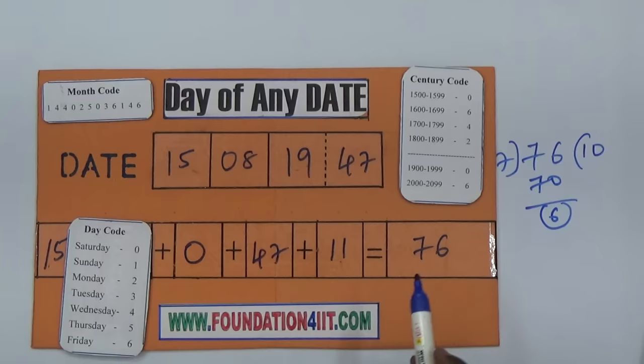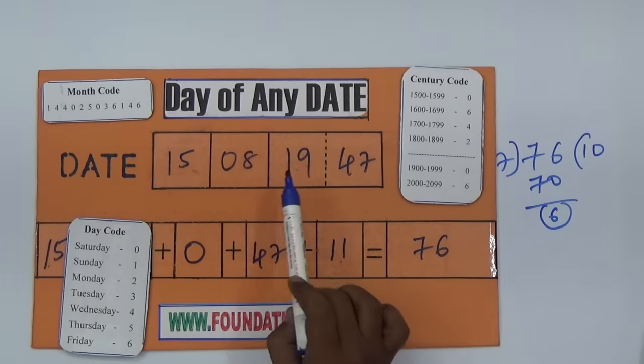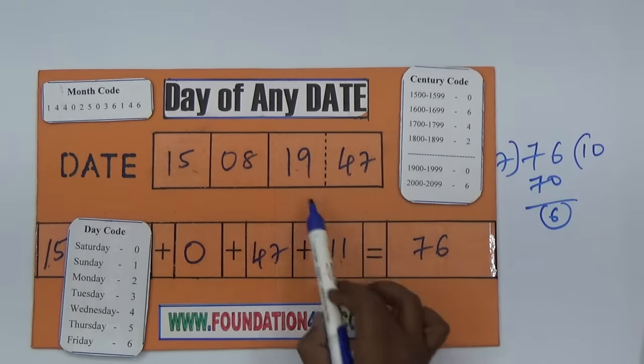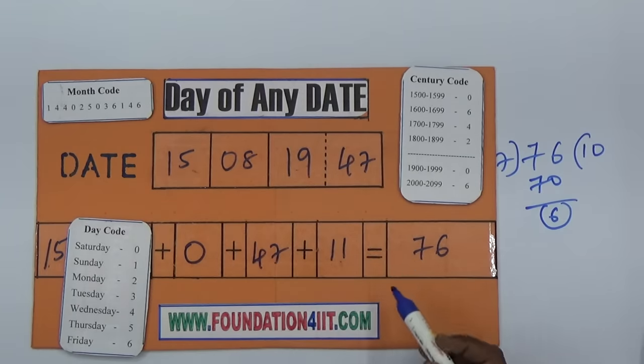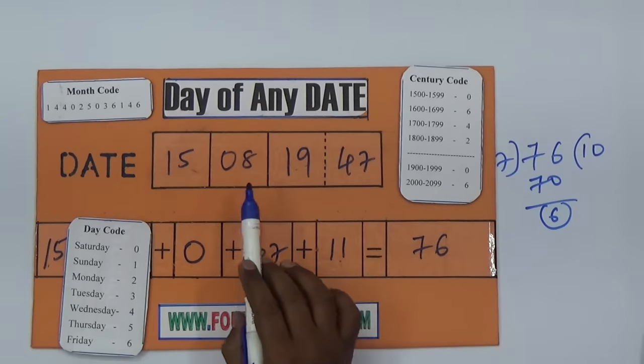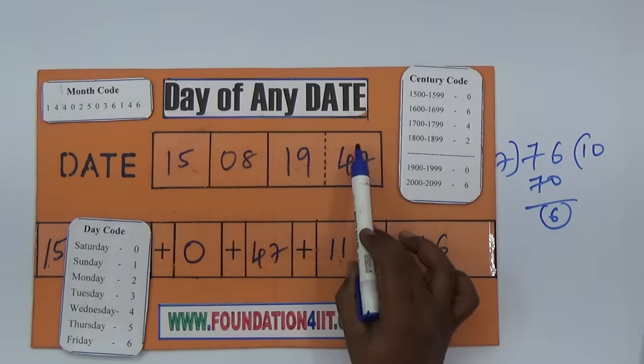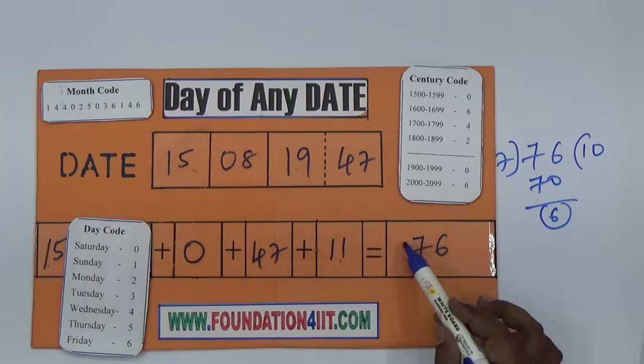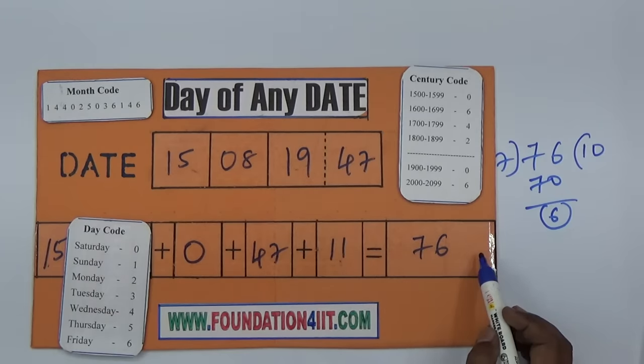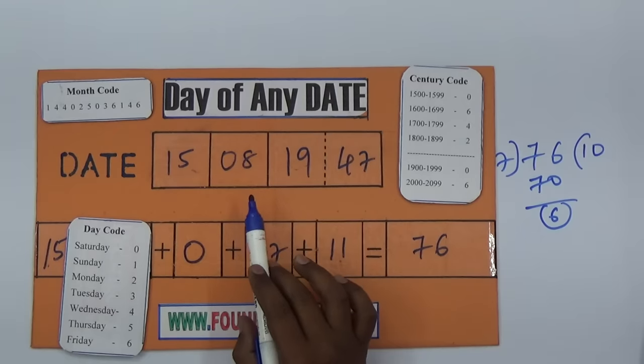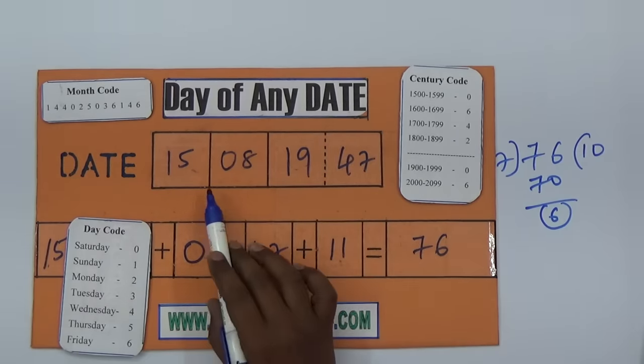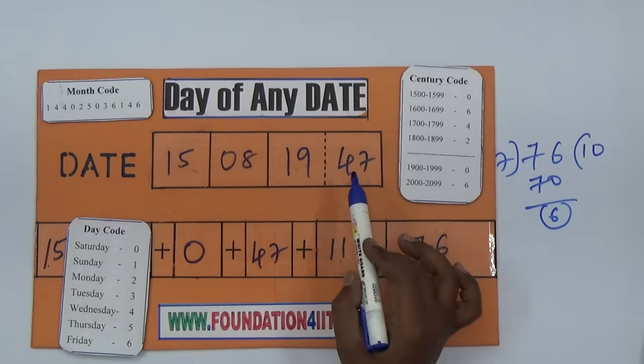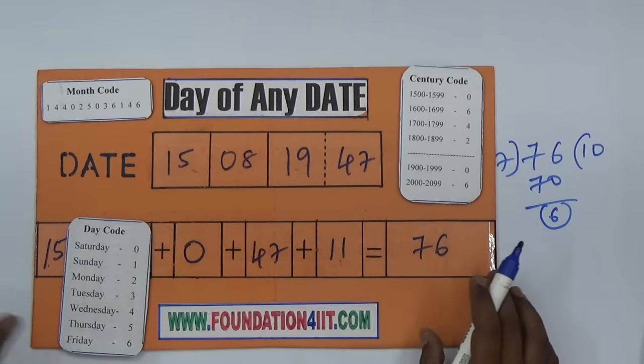One more thing: a special case. If you get a leap year and the month is either January or February, subtract one more number from the total. If the month is January or February and the year is a leap year, subtract one because it's not over. Once February is over, only then the leap year will add. This is the only change for January or February in a leap year.